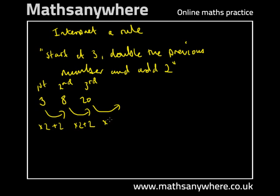Apply the same rule again. Times 2 is 40, add 2 is 42. That's our fourth term. Just to demonstrate,